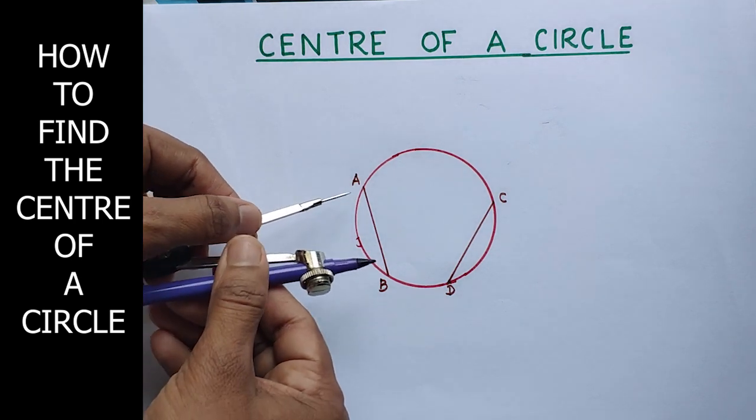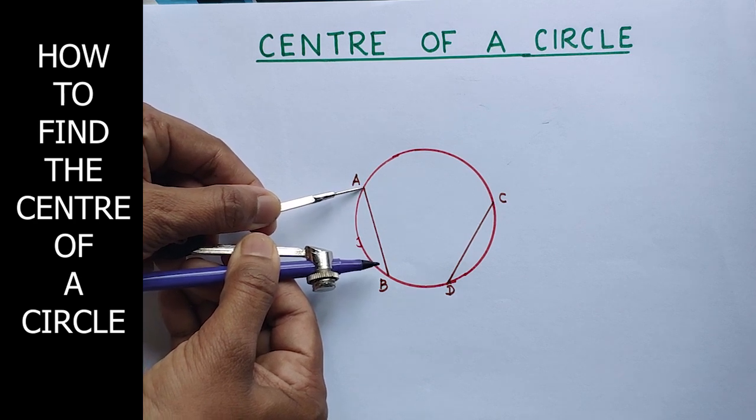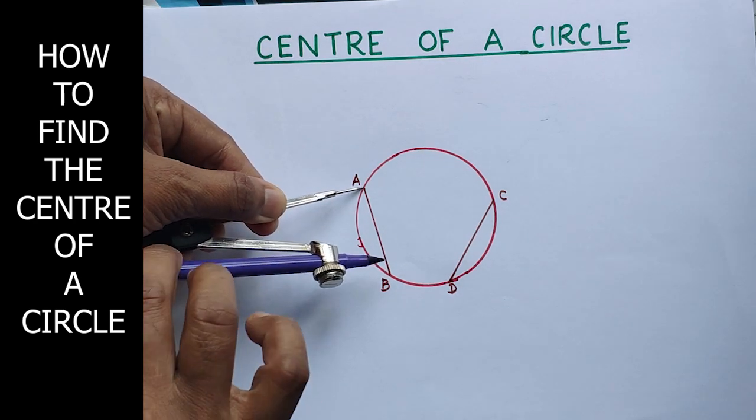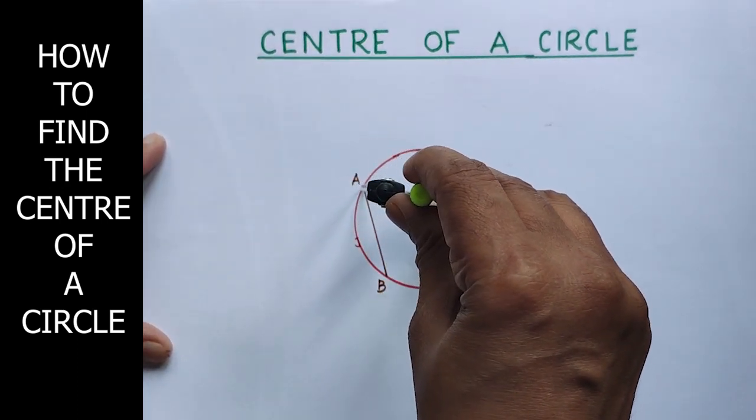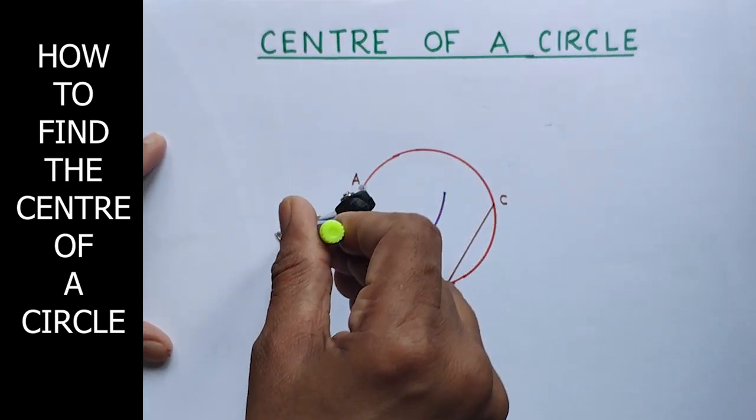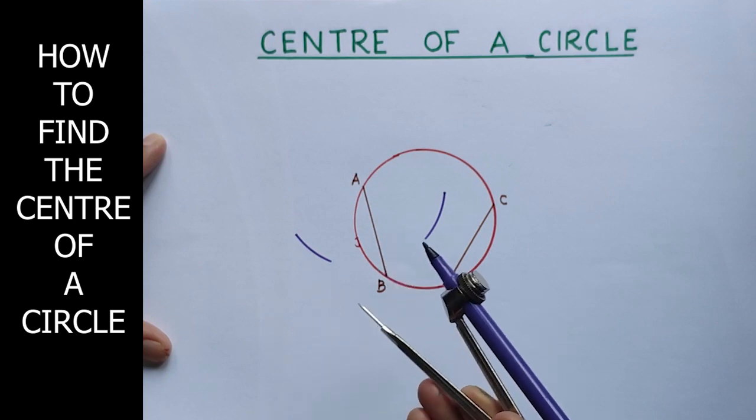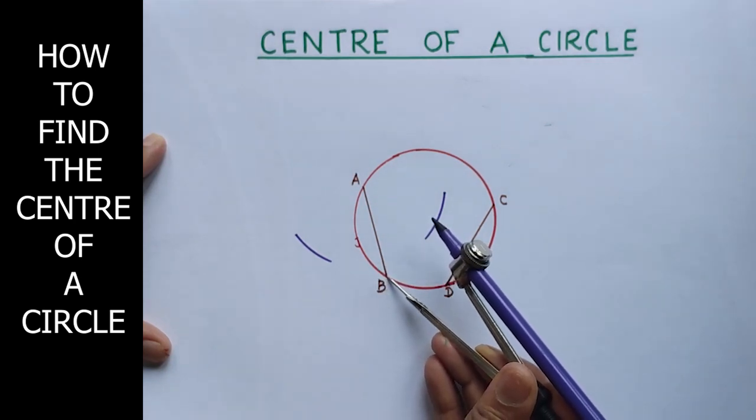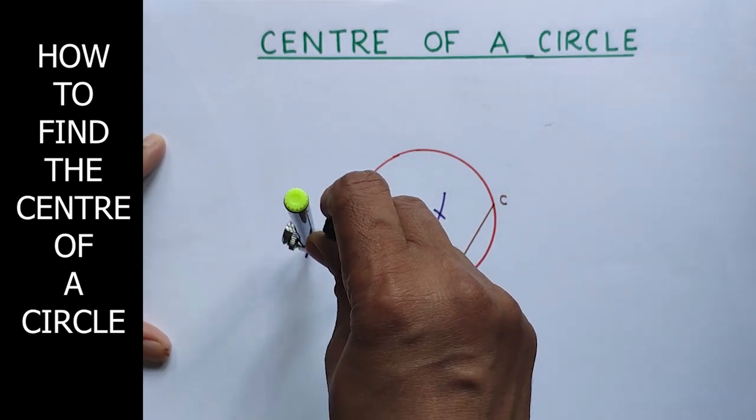For that, place the metal tip on A and take more than half of AB. Draw one arc above and one below. One on the left side and another on the right side. And without changing the compass, place the metal tip at B. Draw two arcs.